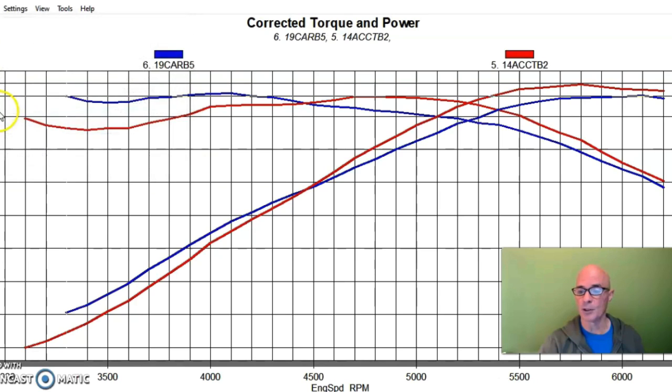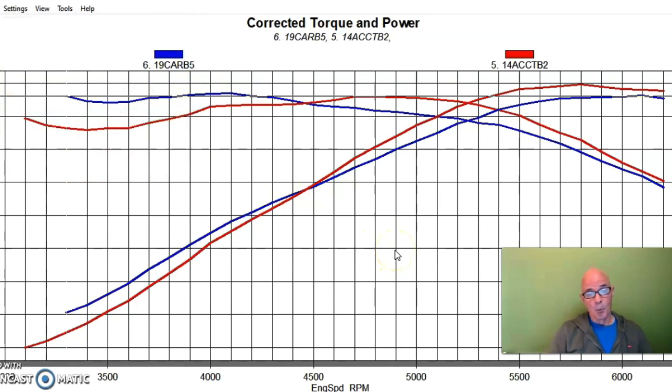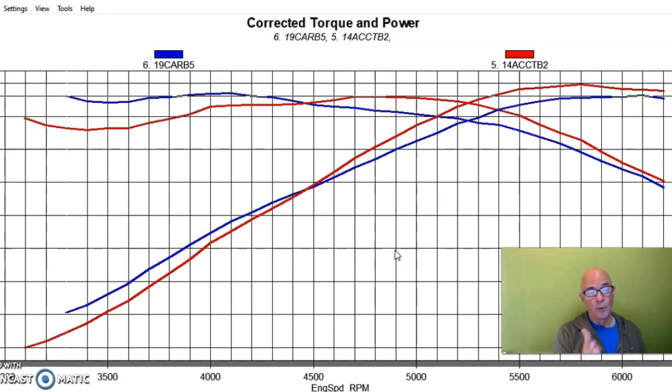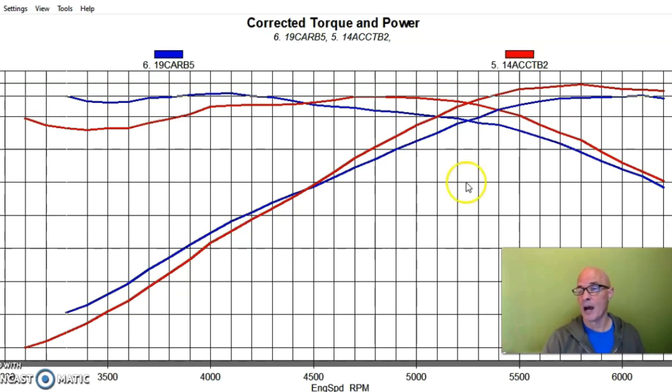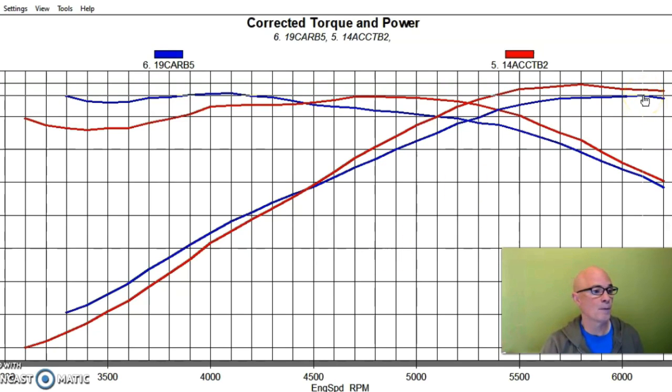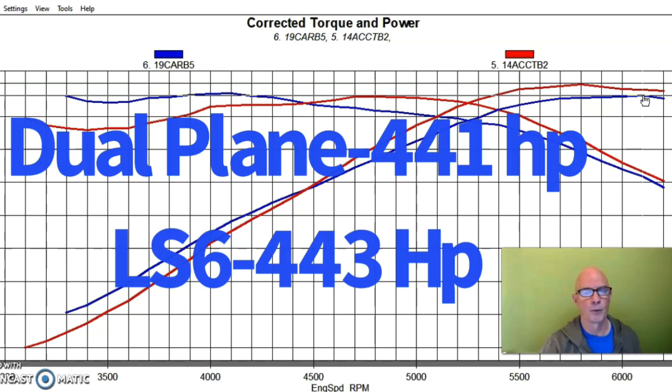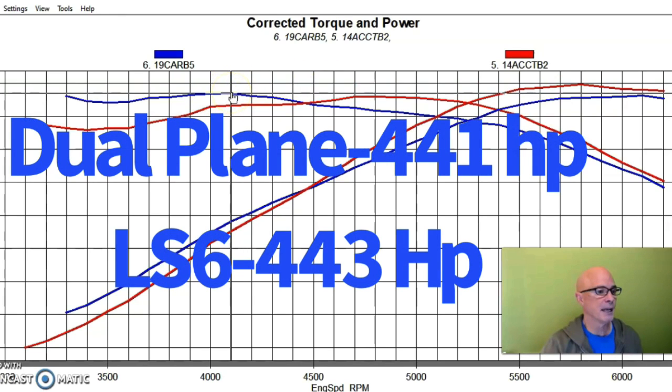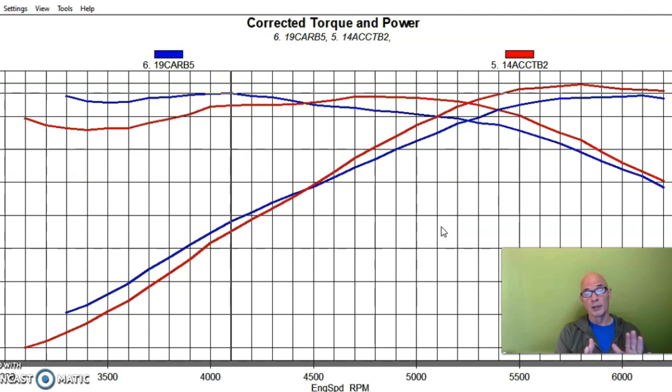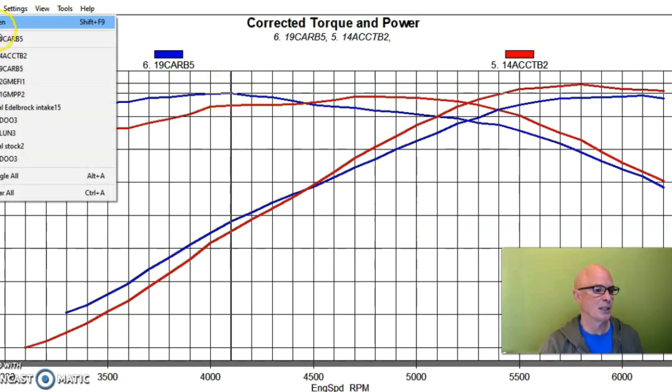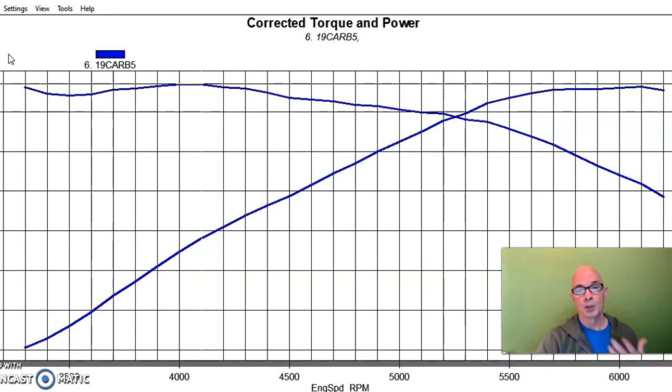For those guys that are interested in knowing, here's how it compares to the fuel injected version. The dual plane actually makes more power down low below 4400 RPM than the long runner factory LS6 intake manifold. It makes less power at the top. In fact it made, for peak power, it made 440.7, so 441, peak torque checked in at 442 or 443 foot-pounds. You can see it made torque earlier in the RPM range than even the long runner factory EFI style manifold.